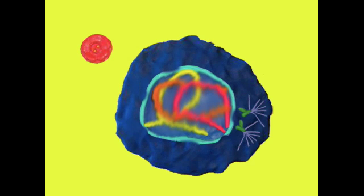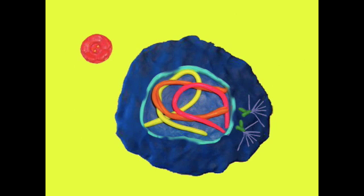The centrosome is an area in the cell where microtubules are produced and consists of two centrioles.